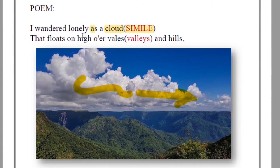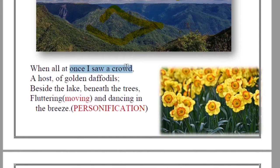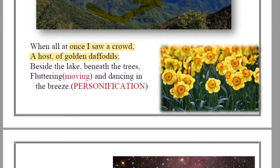As he was moving like the clouds that float on high over vales and hills — vales means valleys — just like white clouds move over valleys and hills, he was also walking here and there. Suddenly, 'when all at once I saw a crowd, a host of golden daffodils.' He suddenly comes upon a beautiful show — beautiful yellow colored wild flowers called daffodils. They were beside the lake, beneath the trees, fluttering and dancing in the breeze.